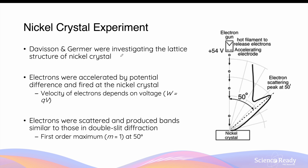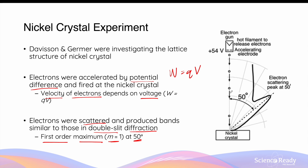The nickel crystal experiment took place after de Broglie's matter wave hypothesis. Davisson and Germer were using electrons to investigate the lattice structure of nickel crystal. Electrons were accelerated by a potential difference and fired at the nickel crystal. The potential difference did work on the electrons according to W equals QV, and as a result, the work done was transformed into the kinetic energy of the electrons. The velocity of the electrons fired at the nickel crystal depended on the voltage used to accelerate them. When electrons reached the nickel crystal, they were scattered and produced band patterns similar to those in a double-slit diffraction experiment involving light. Specifically, Davisson and Germer observed a first-order maximum (m=1) forming at roughly 50 degrees relative to the midline.